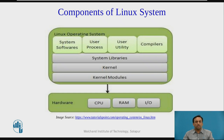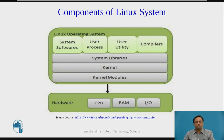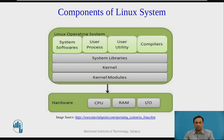After the kernel, the second most important component is system libraries. A system library has special programs that help in accessing kernel features. A kernel must be triggered to perform a task, and this triggering is done by the application. The application must know how to place a system call because each kernel has different sets of system calls. A programmer has developed a standard library of procedures to communicate with the kernel. The most well-known system library for Linux is GLIBC, that is the GNU C library.